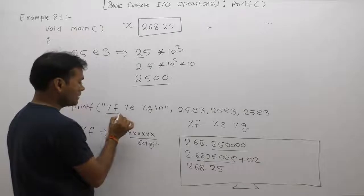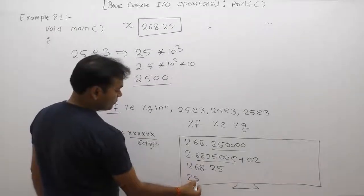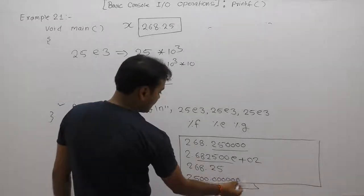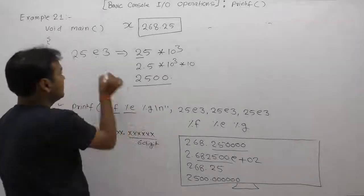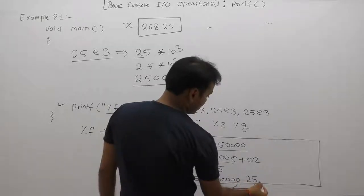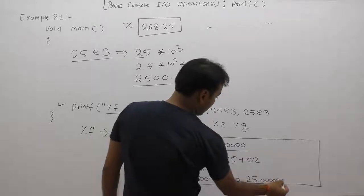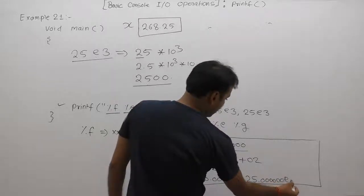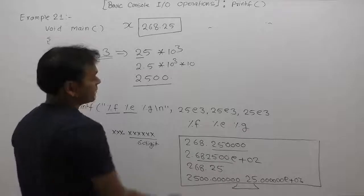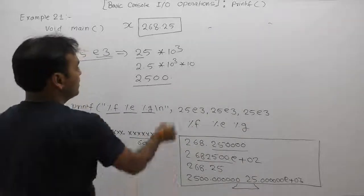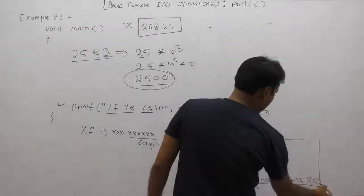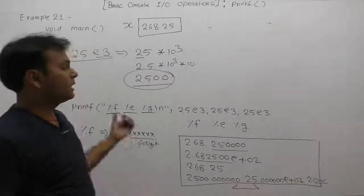For the value 25000: with %f, it is displayed as 25000.000000 (six decimal places). With %e, it is displayed as 2.500000e+03. With %g, it is displayed as 25000 — showing only the exact available decimal positions. This is the final result of this example.